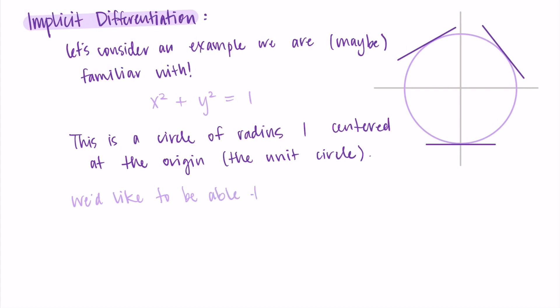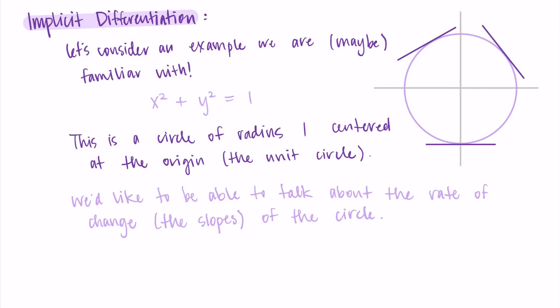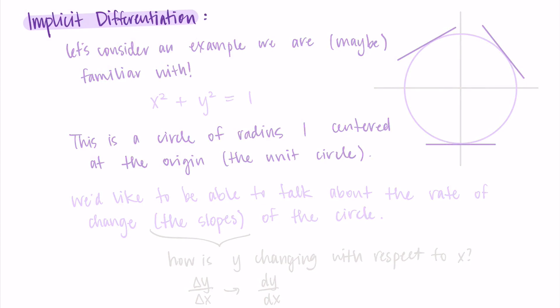This isn't a function — it doesn't pass the vertical line test — but it still has behavior we're interested in. We want to be able to find tangent lines, find slopes, and talk about them. We want to take the derivative of points on this circle. Specifically, the slopes on the circle are how y is changing with respect to x, so we're looking for dy/dx, the derivative of y with respect to x. Our goal when finding slopes or derivatives of implicitly defined things is to find dy/dx. We could use other variables, but most of the time we do dy/dx.